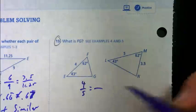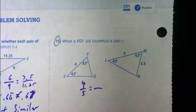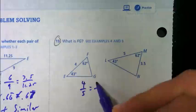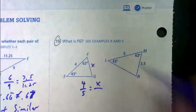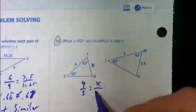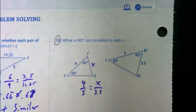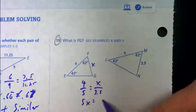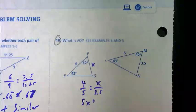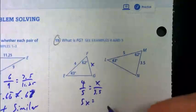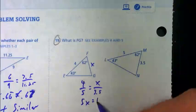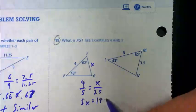So, four-fifths is going to be equivalent to, I'm going to call that side X for now, over 3.5. Again, you might have to deal with some decimals. Cross-multiply and solve. Five times X is 5X. Four times 3.5. Fourteen, you said, right?